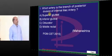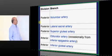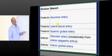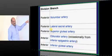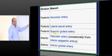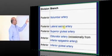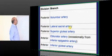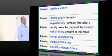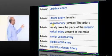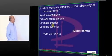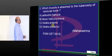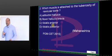Basically we have got three branches from the posterior division — remember the mnemonic SLIP: S is Superior gluteal, L is Lateral sacral, I is Iliolumbar, P is Posterior. All the remaining branches — obturator, inferior gluteal, umbilical, uterine, vaginal, inferior vesical, middle rectal, internal pudendal — are all from the anterior division.